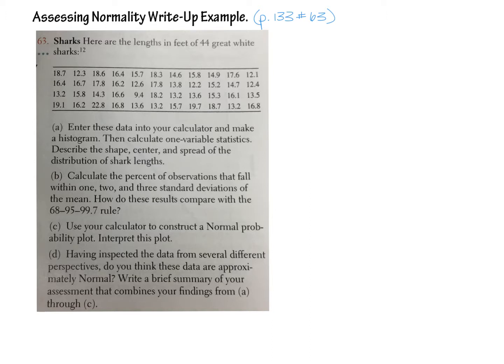This problem is broken into parts A, B, C, and D to help guide you, but on the AP exam they're just going to say: do you have reason to believe the data is approximately normal, yes or no, and why? The three things you need to hit are: number one, the histogram; number two, the empirical rule; and number three, the normal probability plot. Those are the three things you need to have memorized.